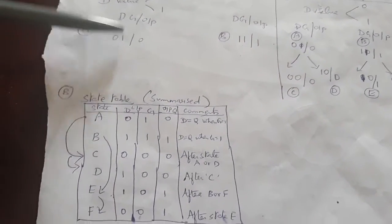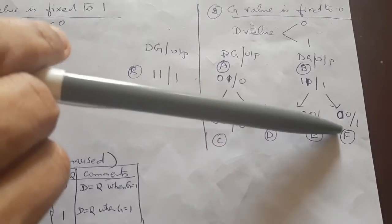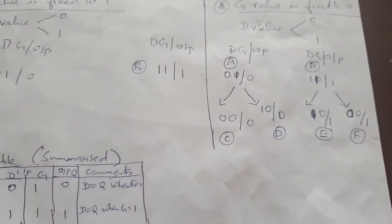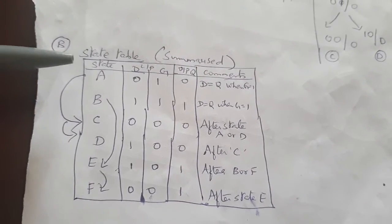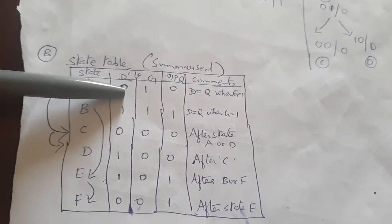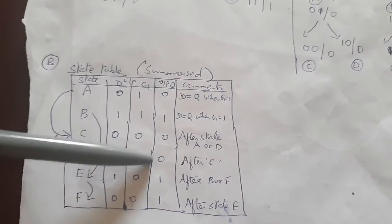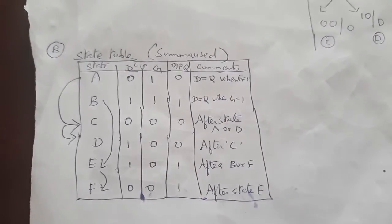We assign a variable for every flow diagram state, labeling them A, B, C, D, E, F. The primitive flow table is summarized with these states. Writing down the state with D, G inputs and output: A is 0,1 — output 0; B is 1,1 — output 1; C is 0,0 — output 0; D is 1,0 — output 0; E is 1,1 — output 1; F is 0,0 — output 1.